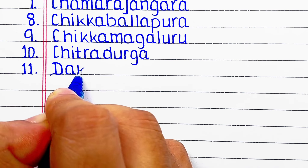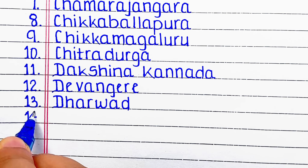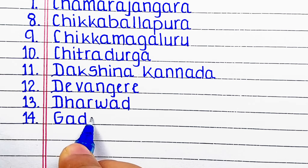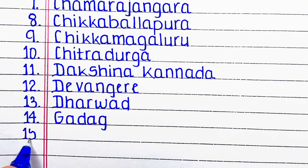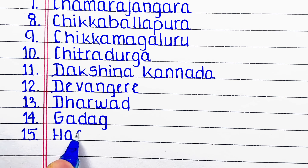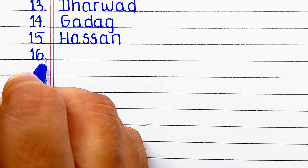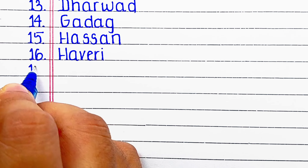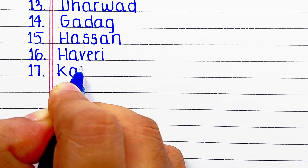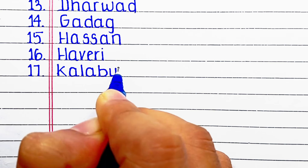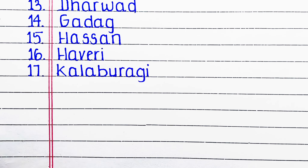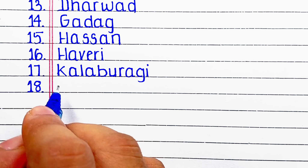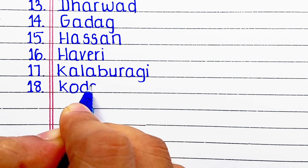Next district is Davanagere. Next district is Dharwad. Next district is Gadag. Next district of Karnataka in our list is Hassan. Next is Haveri. Next district is Kalaburagi. Next district is Kodagu.